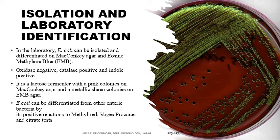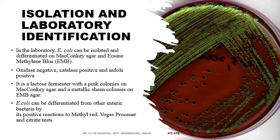Isolation and laboratory identification of E. coli is by selective media and differential media. E. coli is typically oxidase-negative, catalase-positive, and indole-positive. In the laboratory, E. coli can be isolated using differential MacConkey agar and Eosin Methylene Blue (EMB) agar. Because E. coli is a lactose fermenter, MacConkey agar produces a pink coloration, while on EMB agar the E. coli colony appears as a green metallic sheen. E. coli can be differentiated from other enteric bacteria by its positive reaction to the methyl red, Voges-Proskauer, and citrate tests.